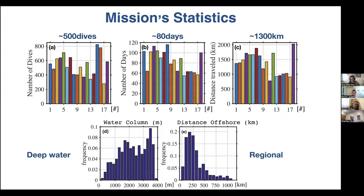Checking the statistics per mission: I show the number of dives, number of days, and kilometers traveled per mission. On average, we do about 500 dives per mission during 80 days, traveling 13 kilometers horizontally. We operate in water columns deeper than 1,000 meters, between 1,000 and 3,000 meters. We do regional monitoring and operate no further than 500 kilometers.